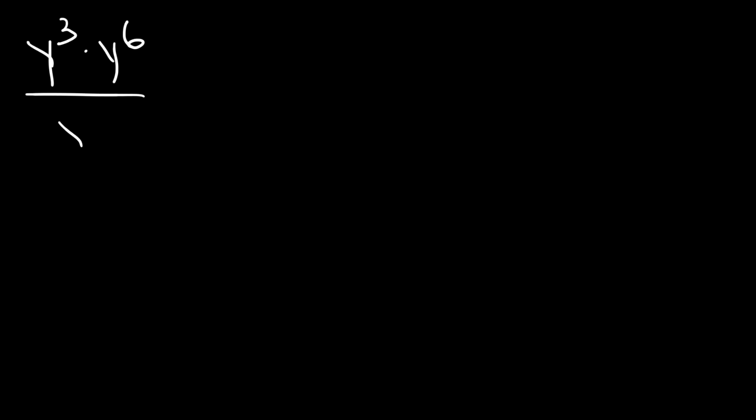Try this problem. What is y cubed times y to the 6th divided by y to the 4th? The first thing we should do is multiply y cubed by y to the 6th on top first. So 3 plus 6 is 9. Now we could divide y to the 9th by y to the 4th. This is going to be 9 minus 4, which is 5.